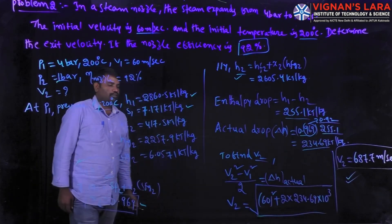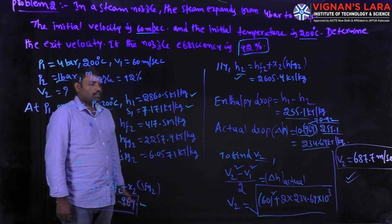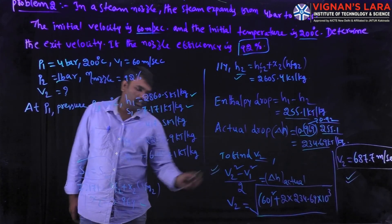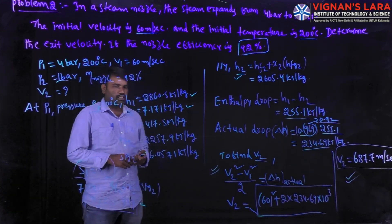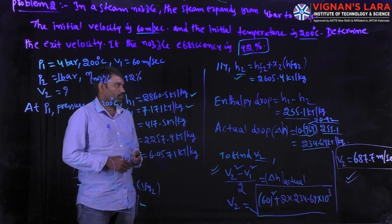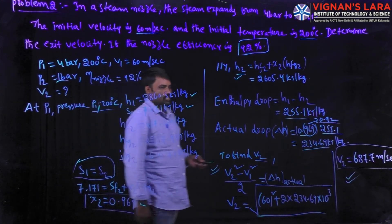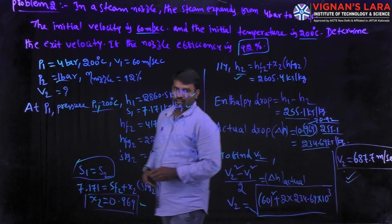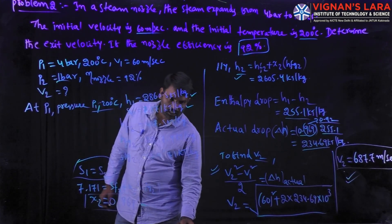The exit velocity can be easily calculated using the nozzle efficiency formula: efficiency equals actual enthalpy drop divided by theoretical enthalpy drop. From this expression, substituting the known values, you can determine the actual exit velocity of the steam. In this manner, you calculate the exit velocity.